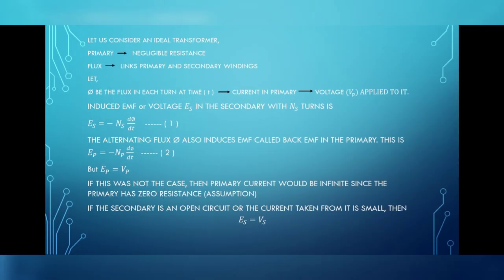Let us consider an ideal transformer, where the primary has a negligible resistance and all the flux links the primary and the secondary windings. Let us apply voltage VP to the primary circuit, hence the current flows in the primary. Therefore, a flux phi will be produced in each turn at time t.